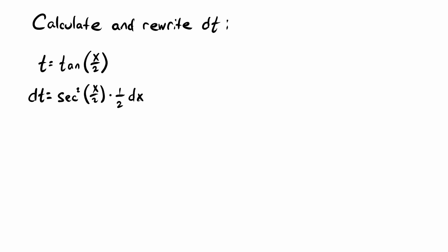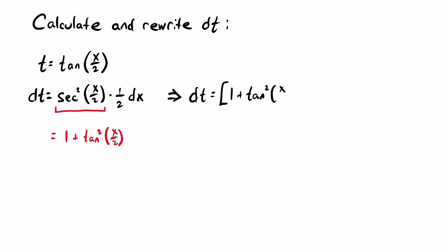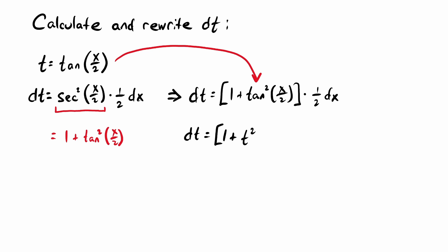We're going to continue and rewrite this. We'll use the Pythagorean identity to rewrite secant squared of an angle, which comes out to be 1 plus tangent squared of that angle — and that angle is x over 2. So we rewrite dt as 1 plus tangent squared of x over 2, times one-half. Don't forget that factor of a half. Now we can use our Weierstrass substitution to replace tangent of x over 2 with t, so we replace that tangent squared term with 1 plus t squared.